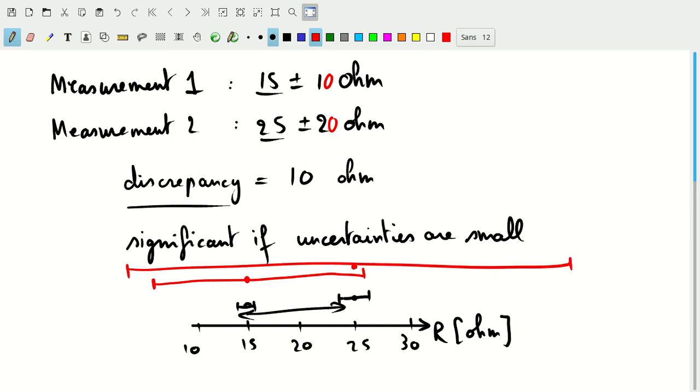So suddenly the discrepancy is not significant anymore because both of those experiments have plenty of true values that are in an area where they're in agreement or where they are consistent with each of those measurements.